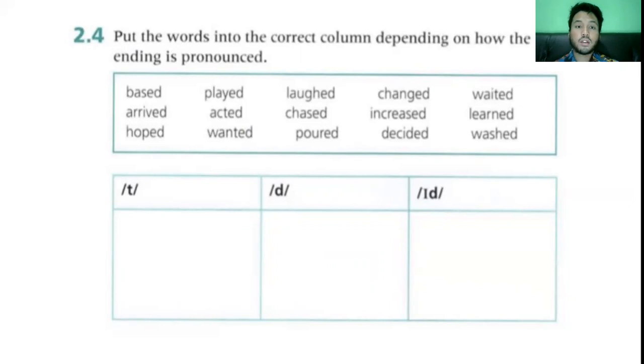All these words are similarly pronounced, so you're supposed to group them together which have the same ending when pronounced. Let's say based and chased. Based and chased are in the same group because they sound the same at the end. And poured, and poured and learned.